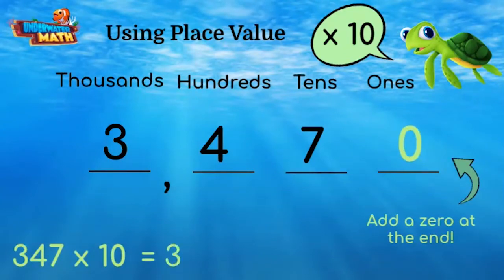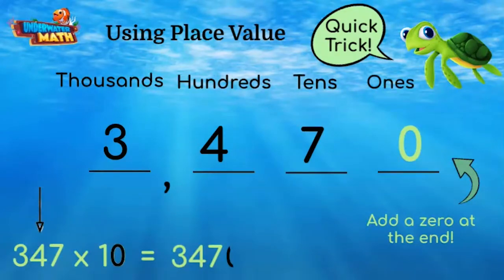There we have it: 347 times 10 equals 3,470. But wait, here's a quick trick you can use anytime you multiply a whole number by 10. Take the number you are multiplying and simply add one zero onto the end, because you are just multiplying by one with a zero. Cool trick, am I right?